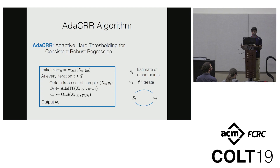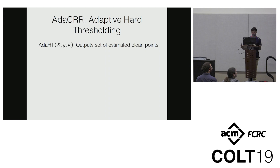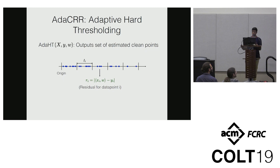Here are the guarantees our estimator achieves. After running the algorithm for roughly log n iterations, the error in the regression vector scales as sqrt(d/n), ignoring log factors. This is consistent — as n goes to infinity, the error goes to zero. The breakdown point holds for any alpha less than 1 minus 1 over log log n, meaning it can tolerate any constant fraction of corruptions as n goes to infinity.